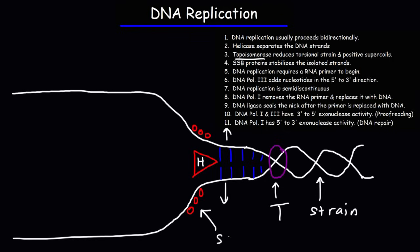Next, we have the SSB proteins — the single-stranded binding proteins. These SSB proteins protect the two strands from cleavage. They also stabilize the two strands, preventing them from snapping back together.